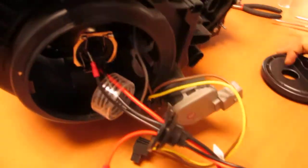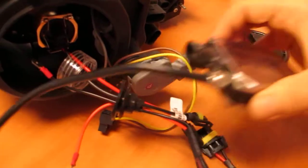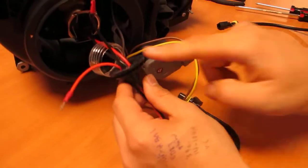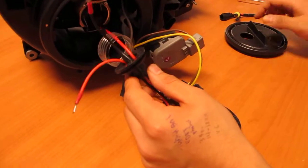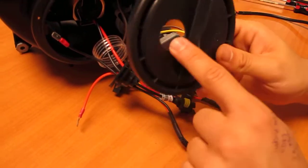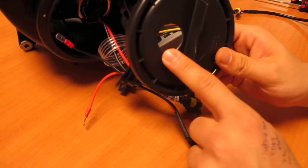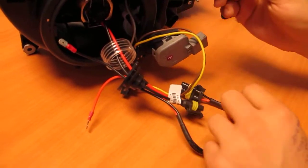The other thing you want to do before connecting your HID ballast is to take notice that you have an HID grommet. This grommet is to serve as a plug so that no moisture or water can fall into the housing and cause any condensation. So once you have that...